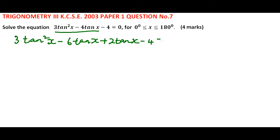So we can factorize this and get (3 tan x + 2)(tan x − 2) = 0. This is after factorizing.